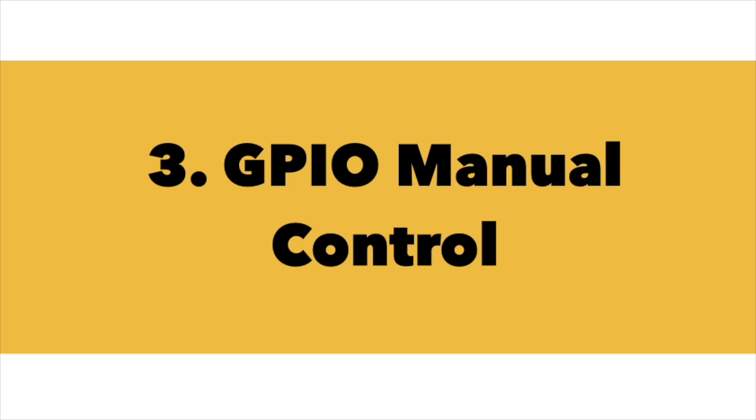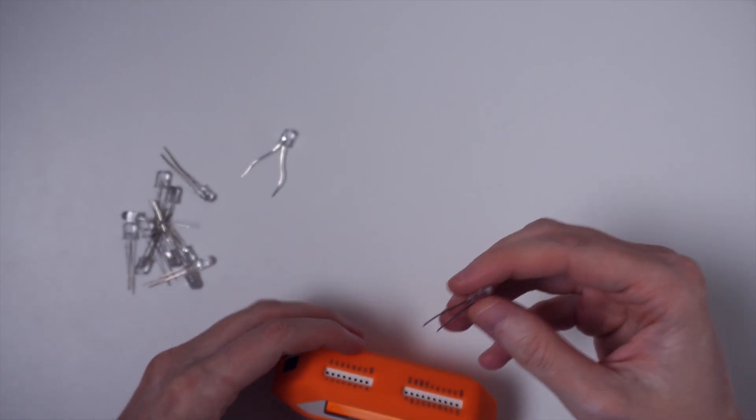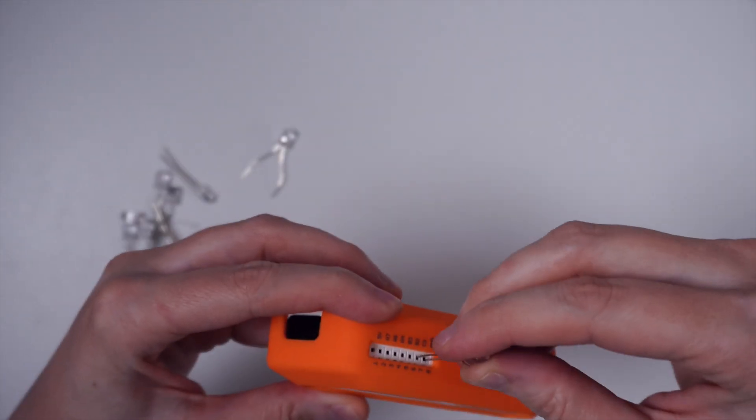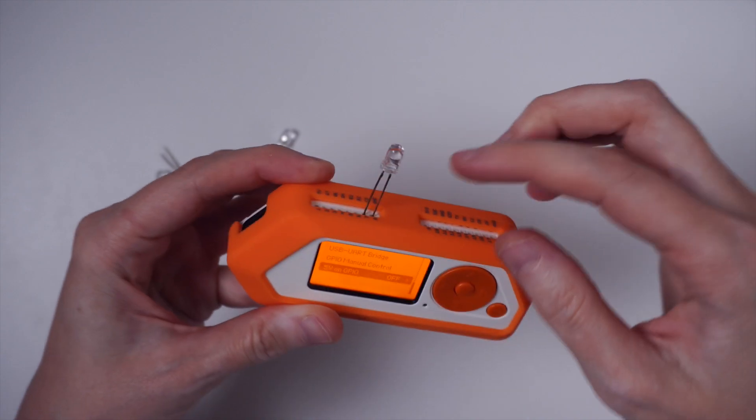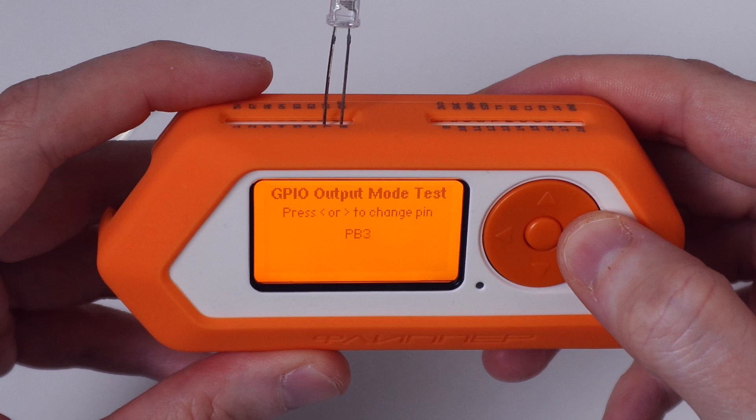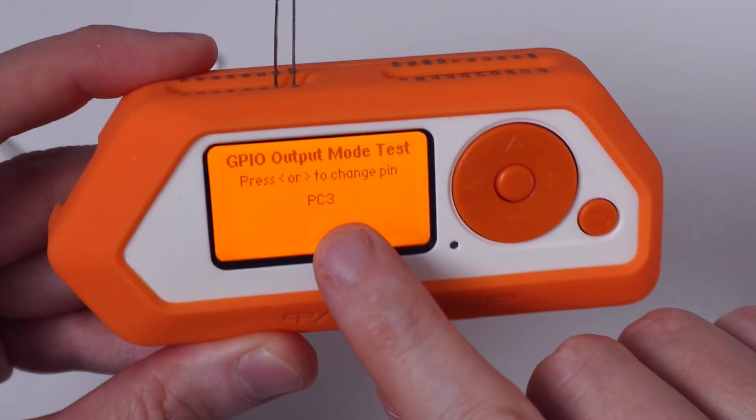So now we are going to control the LED diode through GPIO manual control option on the flipper. So what will happen? We will reconnect our LED diode to some other port and it doesn't matter which one. Just the minus connector you will plug to the ground GND port and the plus you can connect anywhere from A7 to C3. So in this case I'm going to use C3 port.